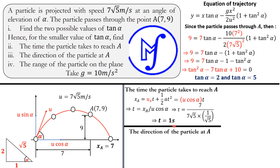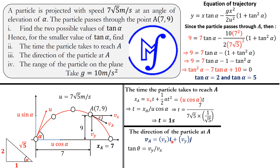The next part asks for the direction of the particle at point A. At point A, the particle has a final velocity v_A making an angle theta with the horizontal, with horizontal component v_x and vertical component v_y. The direction is given by theta = tan⁻¹(v_y / v_x), since v_y is opposite to the angle and v_x is adjacent. We need to find both v_x and v_y.